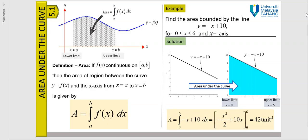Here is the integrand function. When we evaluate the integrand from the lower limit to the upper limit, we actually find the area under the curve. This integrand is given by a curve, which can be any function — a linear function, quadratic function, polynomial, rational function, trigonometric, or exponential.